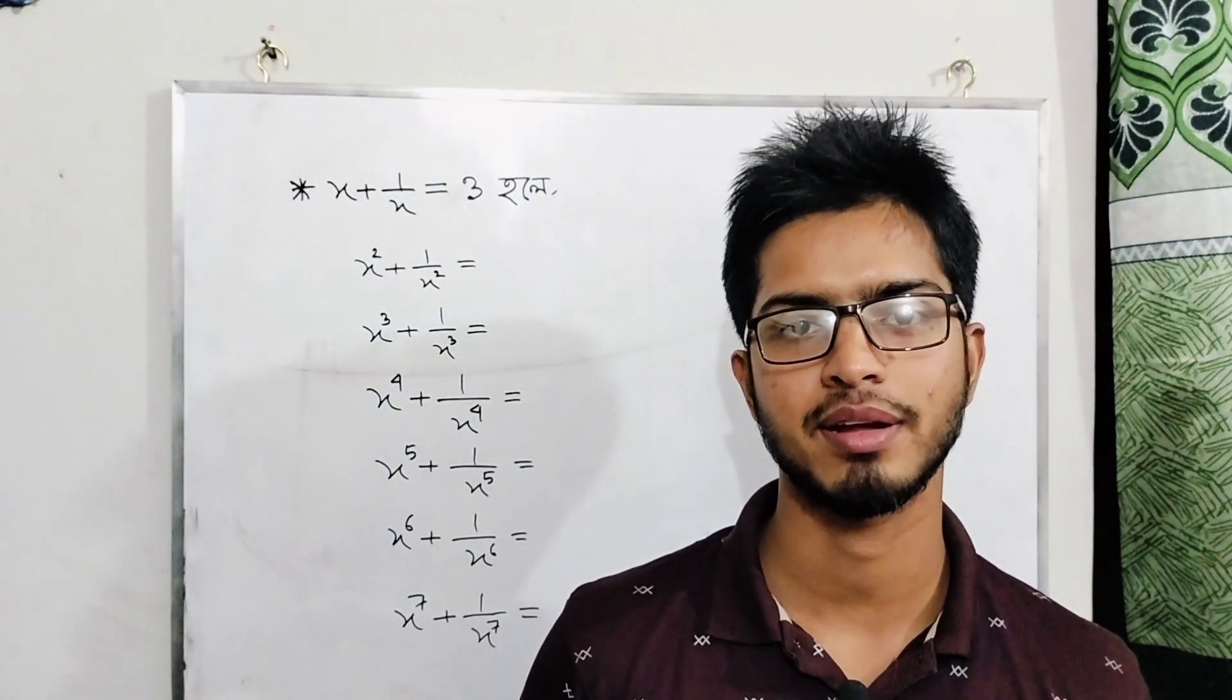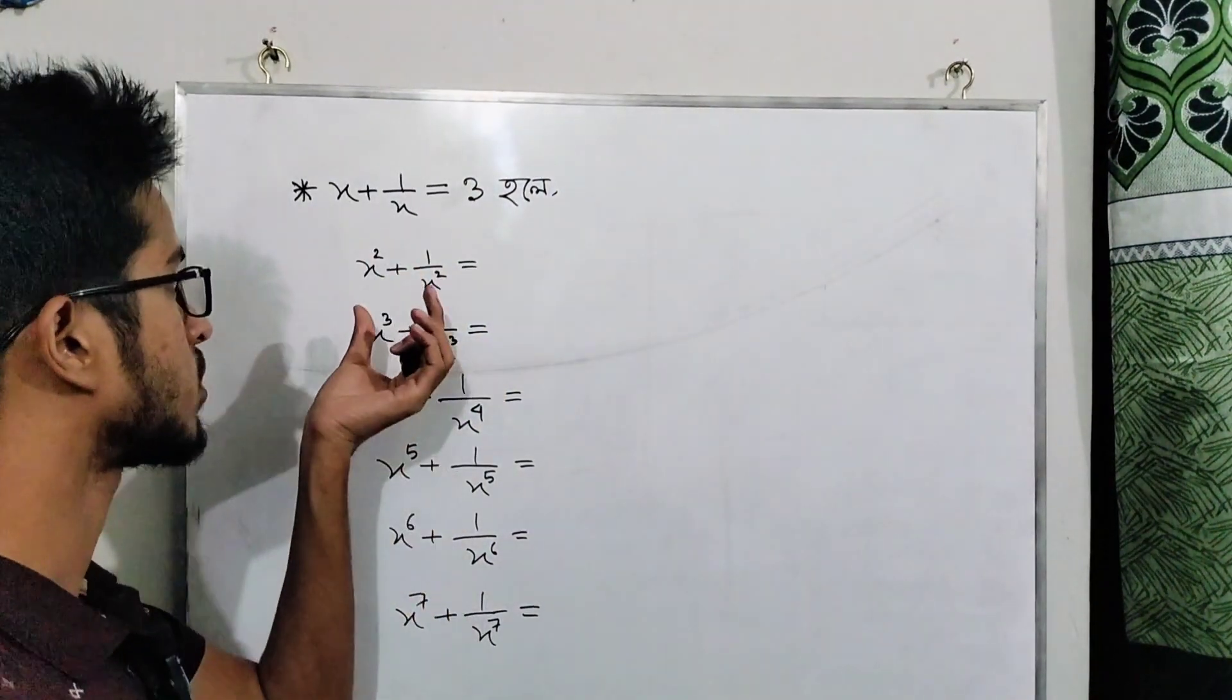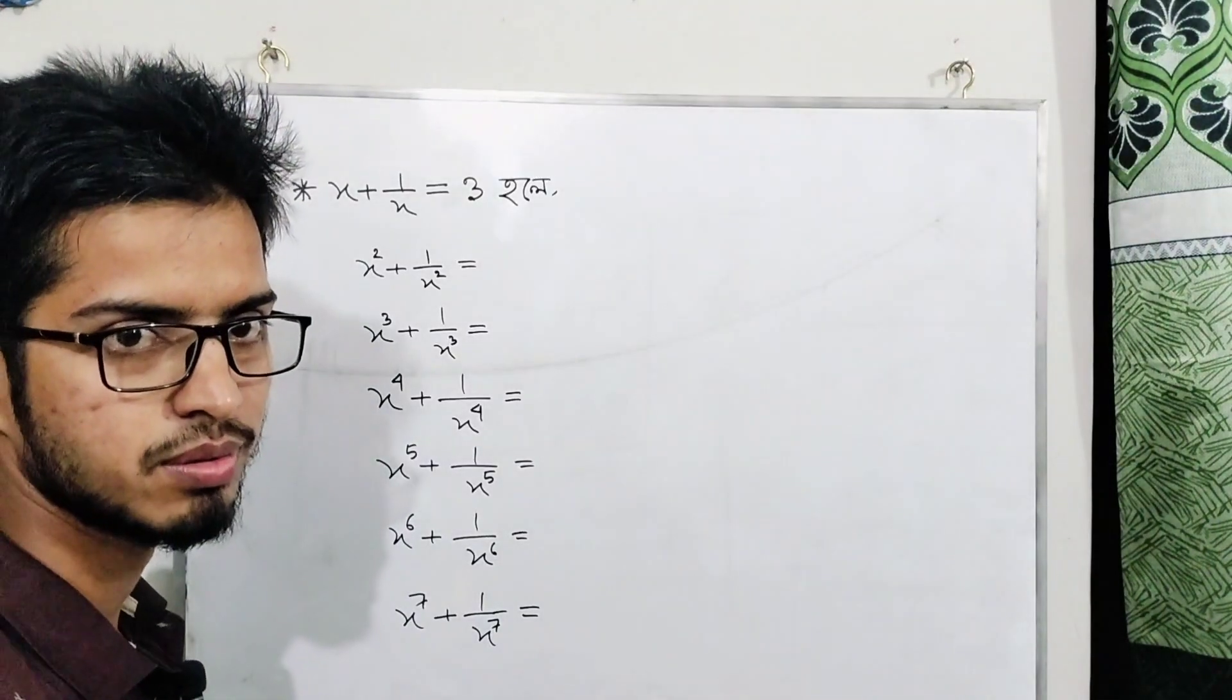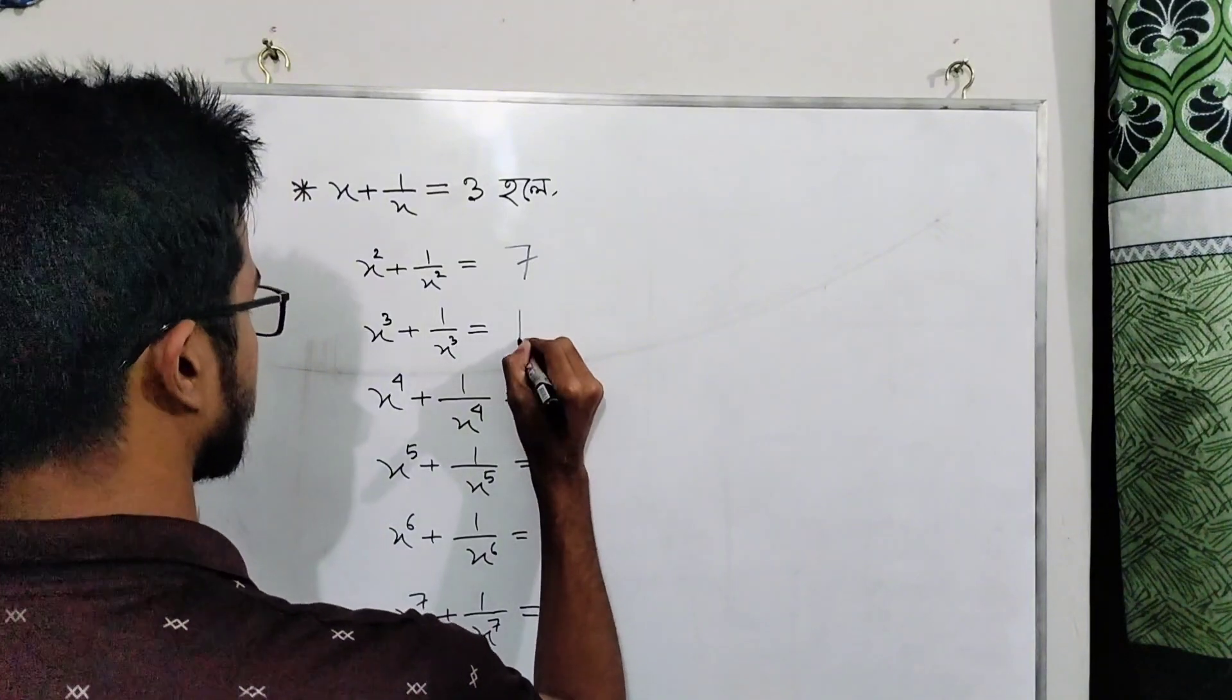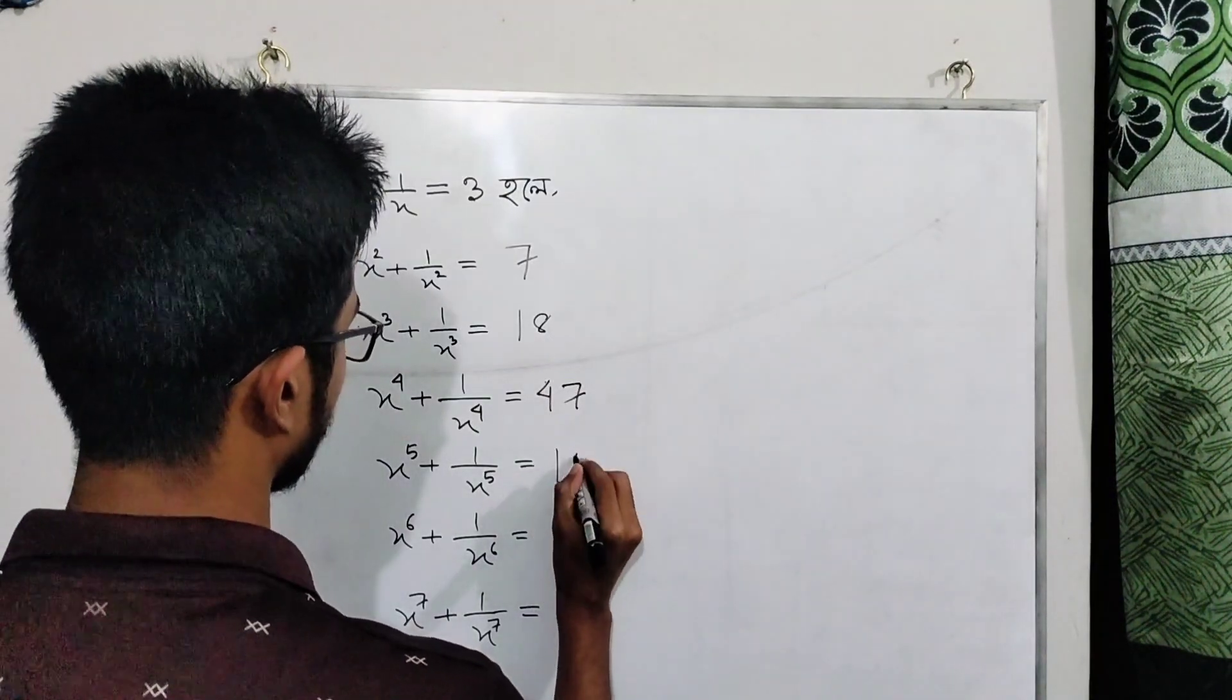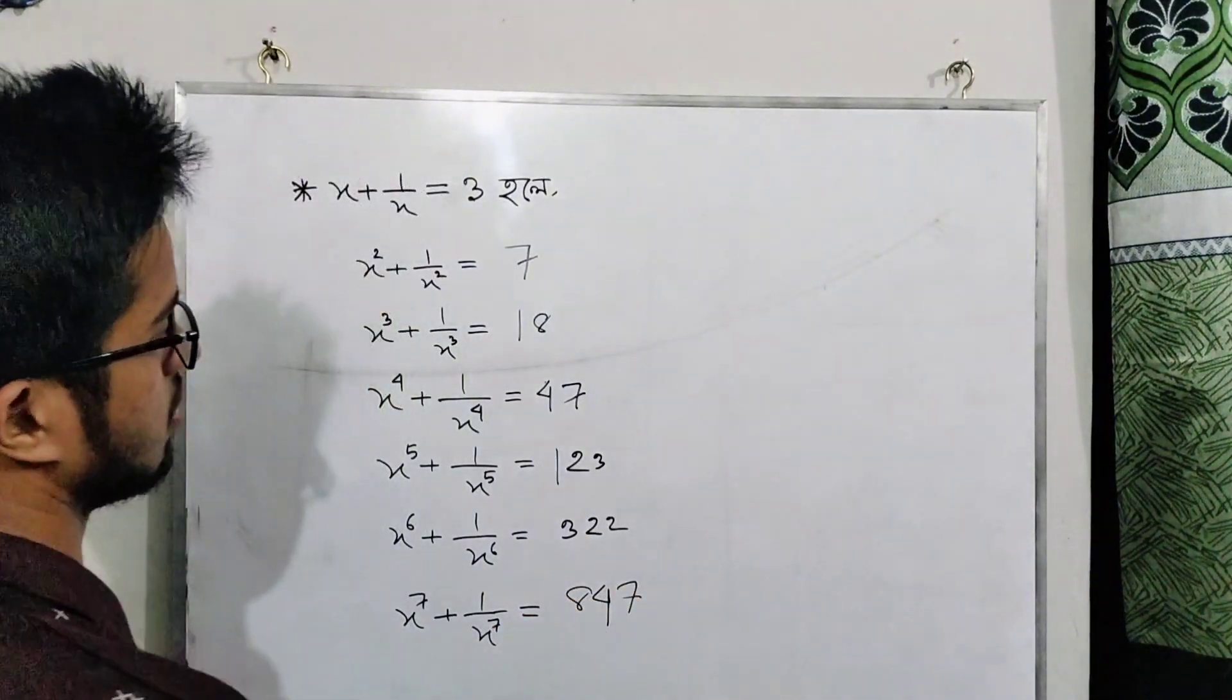Assalamualaikum. In this Square Math Academic lesson, I'll show you a quick secondary-level problem. We'll take x plus one by x equals three, and we need to find several values including when the power is seven.